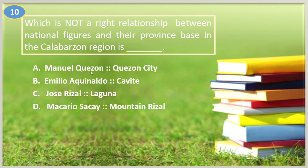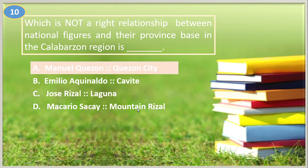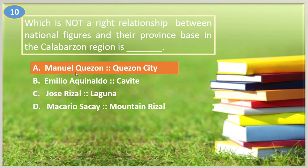Number ten. Match between national figures and their province based in the Calabarzon region: A. Manuel Quezon – Quezon City, Emilio Aguinaldo – Cavite, Jose Rizal – Laguna, Macario Sakay – Mountain Rizal. The answer is letter A, Manuel Quezon – Quezon City.